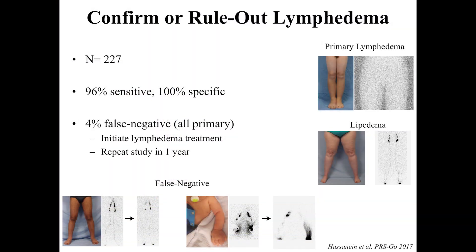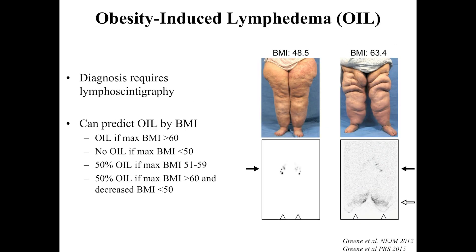Here's an example: a patient referred for lymphedema who I thought more likely had lipedema based on phenotype and history. You can see they have a normal test with uptake of tracer into the inguinal nodes. Here are a couple of patients with primary lymphedema of the upper extremity — normal lymphoscintigram on first exam, but repeated a year later, you can see there's no longer transit to the axillary nodes and there's dermal backflow.